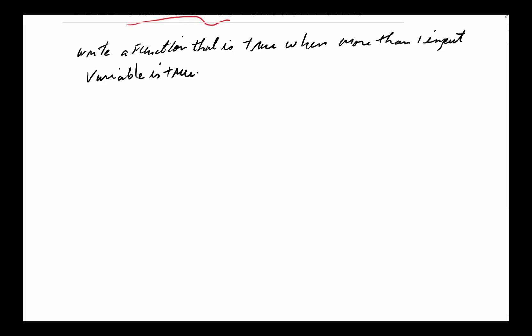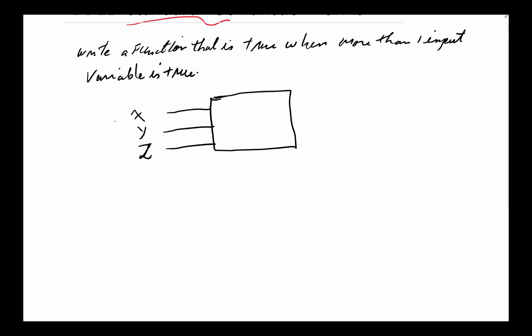One of the first things we need to do is take this information and turn it into a truth table. Before that, we want to make sure we do the system diagram. Since this didn't define how many variables we have, and we're trying to use the simplest example with enough complexity to demonstrate all definitions, we're going to use three input variables: x, y, and z. These are the inputs coming in and we have simply one output, which is f(x, y, z).